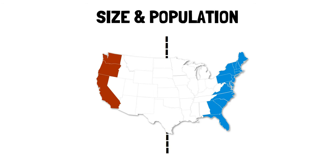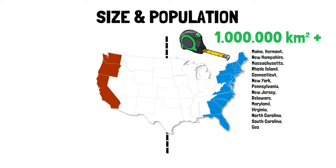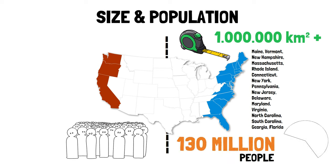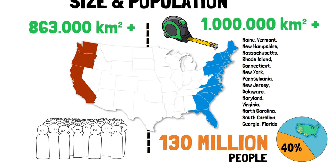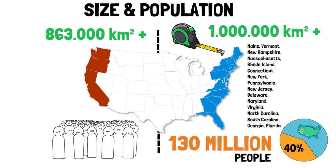When it comes to size and population, the East coast is over 1 million square kilometers, made up of the states of Maine, Vermont, New Hampshire, Massachusetts, Rhode Island, Connecticut, New York, Pennsylvania, New Jersey, Delaware, Maryland, Virginia, North Carolina, South Carolina, Georgia, and Florida. Its population is around 130 million, almost 40% of the United States total population. The West coast size is smaller at 863,000 square kilometers — not that much smaller, which means those three states are much bigger than many of the other 16.